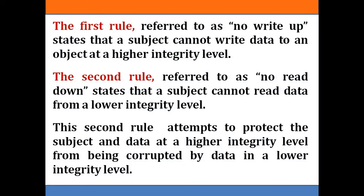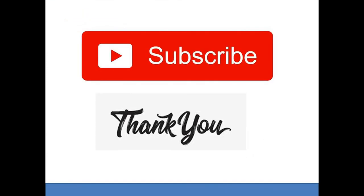There are two types of rules defined by the Biba model. The first rule, referred to as the no write up rule, states that a subject cannot write data to an object at a higher integrity level. The second rule, referred to as no read down, states that a subject cannot read data from a lower integrity level. This second rule attempts to protect the subject and data at a higher integrity level from being corrupted by data at a lower integrity level.